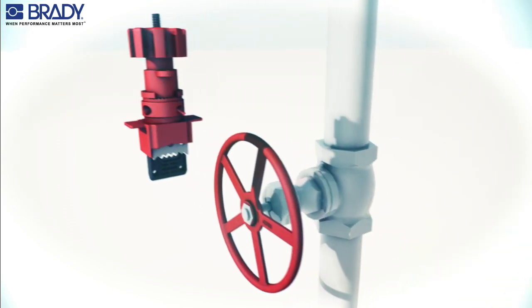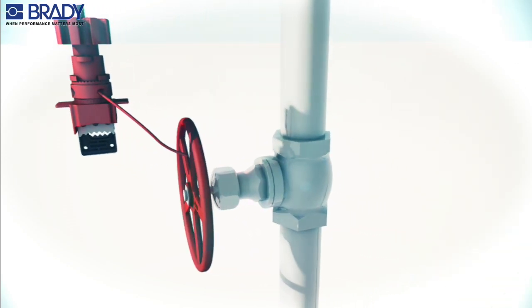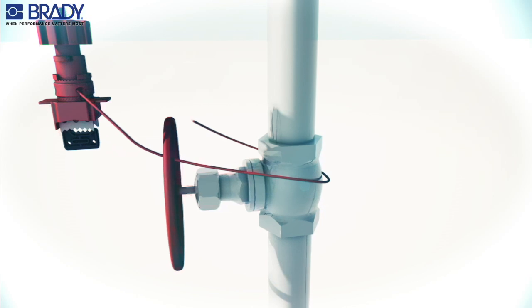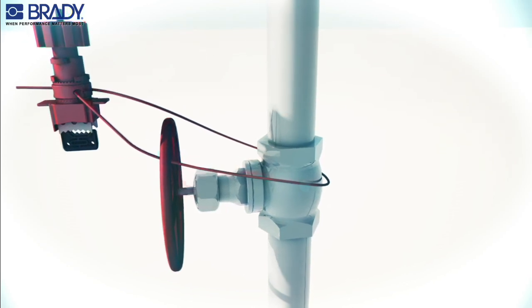To lock out a gate valve in the off position, insert the cable through the cable hole in the universal valve lockout and pull the cable through.